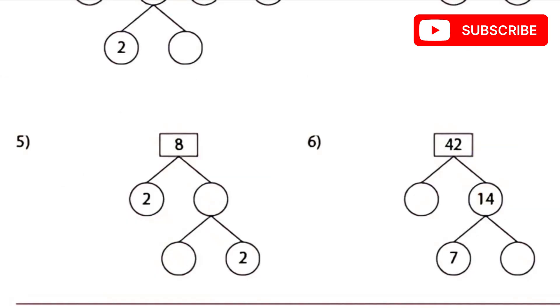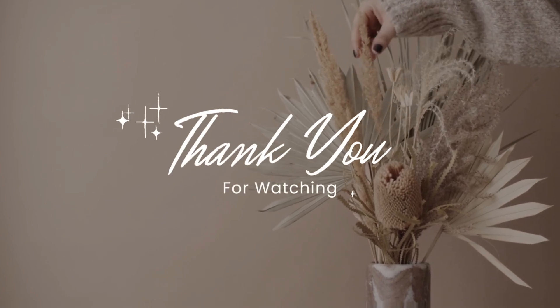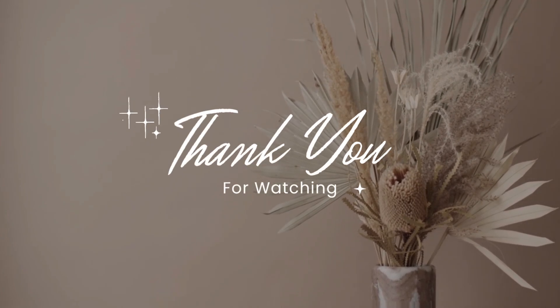Next question is 8. 8 can be divided into 4 and 2, and 4 can be divided into 2 and 2. So the prime factors of 8 are 2 × 2 × 2. Next is 42. 42 can be divided into 3 and 14, and 14 can be divided into 7 and 2. So the prime factors of 42 are 3 × 7 × 2.